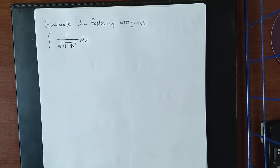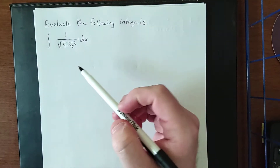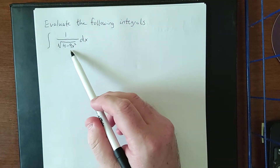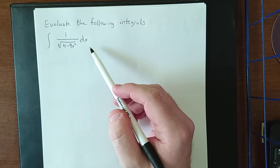Next up we're going to take a look at some more advanced examples of integrals involving inverse trigonometric functions. The first one is the indefinite integral of 1 over the square root of 4 minus 9x squared dx.